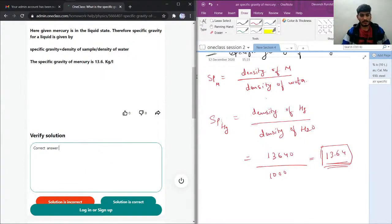But the last statement, there will be no units. Therefore specific gravity of mercury is 13.6.